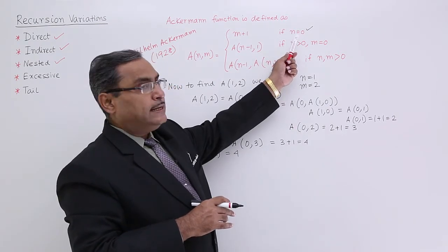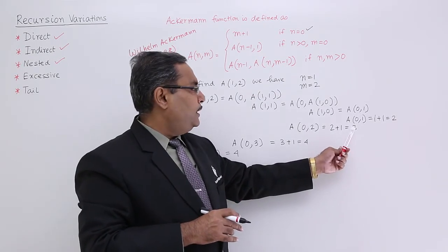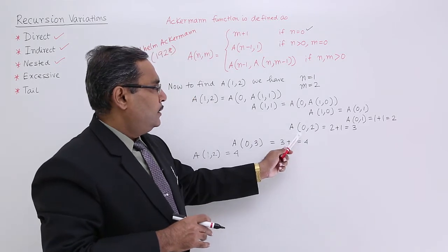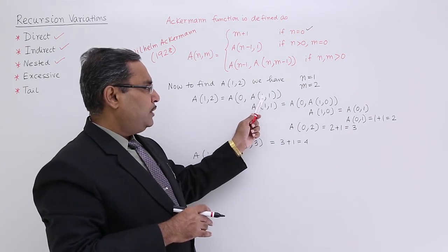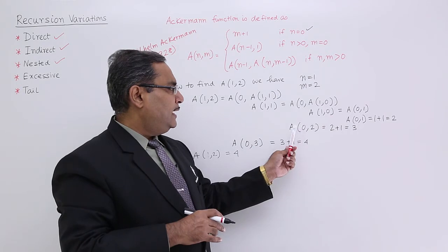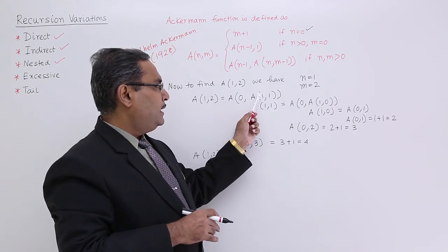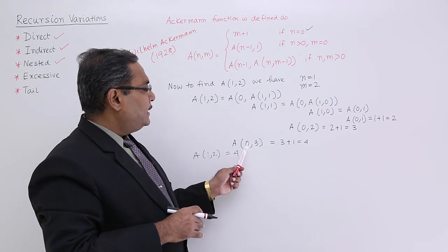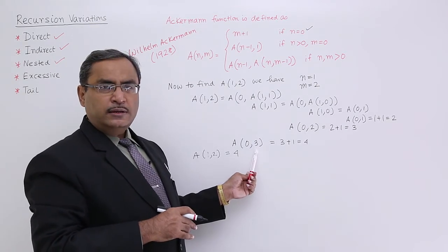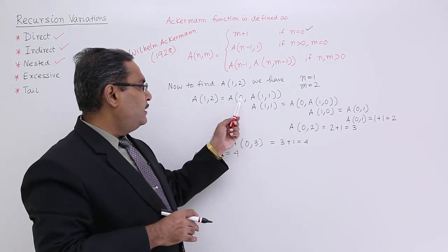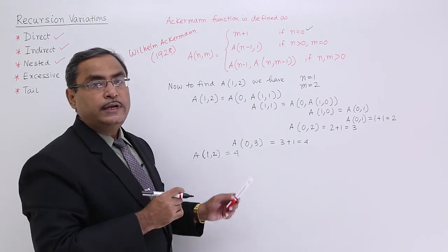A(0, 2) returns 3, so now we have A(0, 3). Again n is 0, satisfying the first case: m + 1 = 3 + 1 = 4. So it gives the value 4. Therefore A(1, 2) = 4.